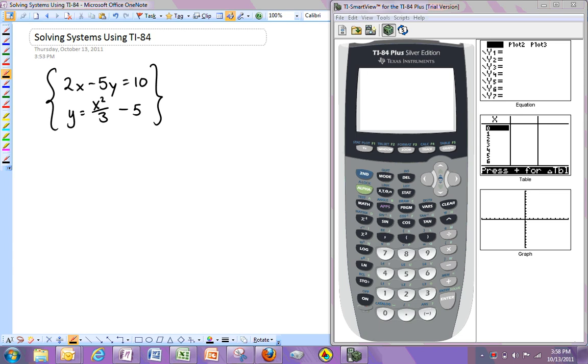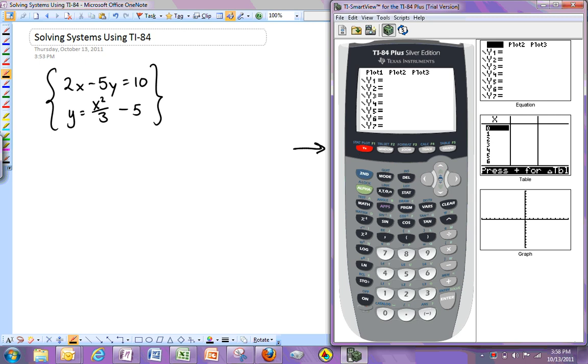So in order to graph stuff, remember you want to hit the Y equals button, which is over here on the top. I can't write on the actual screen where the calculator is, just so you know. So here's Y equals. And everything has to be in Y equals form. So if you look over at our two equations, the first one we're already going to have to rearrange that one. The second one is already in good shape because it's already Y equals.